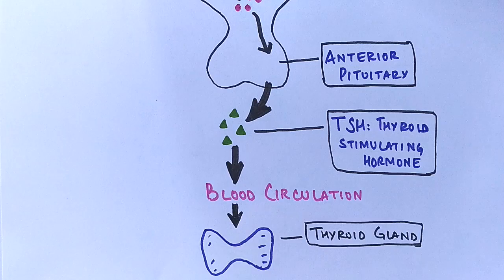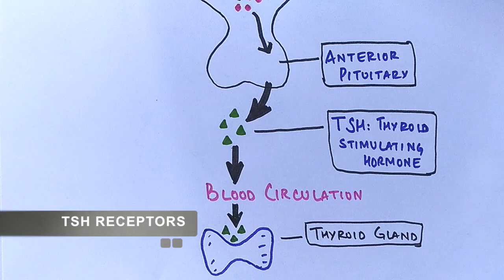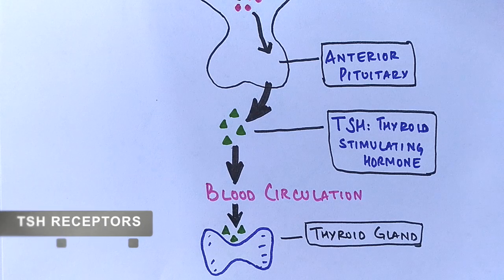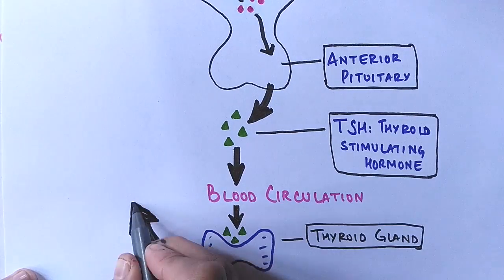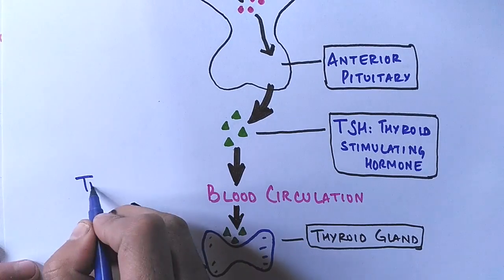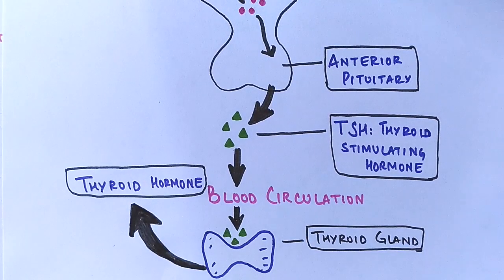Within the thyroid gland there are thyroid follicular cells which have the majority of TSH receptors. They receive the signal of TSH and transduce the signal. There are several steps including upregulation of sodium iodine symporter activity on the basolateral membrane of follicular cells, iodine trapping and more, which finally leads to formation and secretion of T3 and T4 across the basolateral membrane.